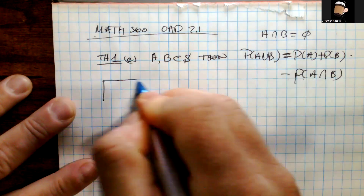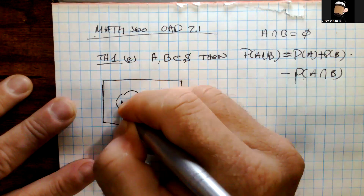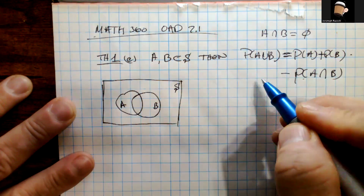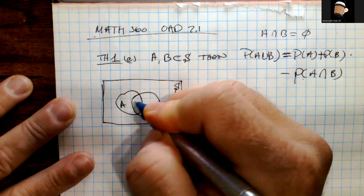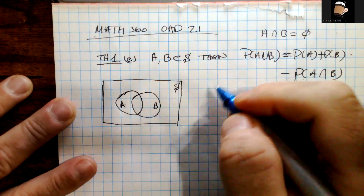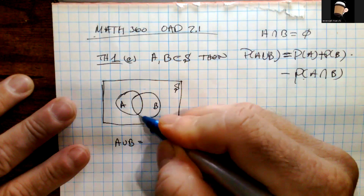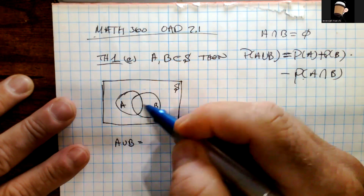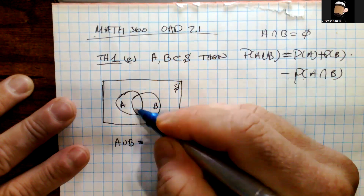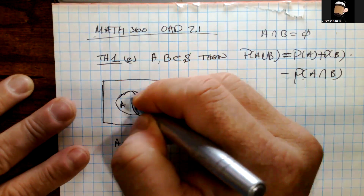Let's draw a picture to make more sense of this situation. Here's A and here's B inside the universal set S. We want to write A ∪ B as the union of two disjoint sets that still equal the same area. A ∪ B covers both circles including the overlap — but we need to express it as clearly disjoint sets.